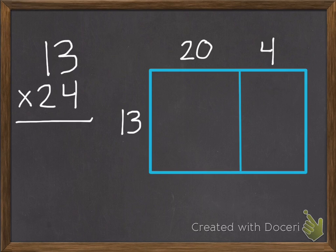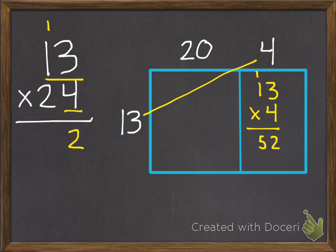When doing a multiplication problem in standard method, we start with our ones on our bottom number and we multiply that times the number at the top, which we've done in our first couple of lessons. So with our model, we also do the same thing. We have that 13 times the 4. 3 times 4 is 12. 4 times 1 is 4 plus our extra 1 makes 5.